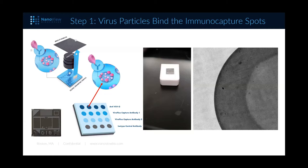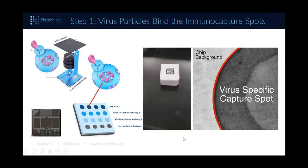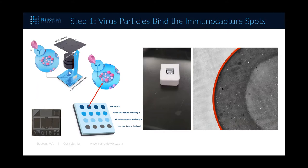During incubation, we start by loading the sample on the chip. We blot on about 50 microliters of mostly diluted sample — something around 10^8 particles per mL of intact virus is a good starting point. When they're down there binding during incubation, they'll interact with that virus-specific capture spot, and then we'll characterize those bound particles for additional signals with the rest of the assay.